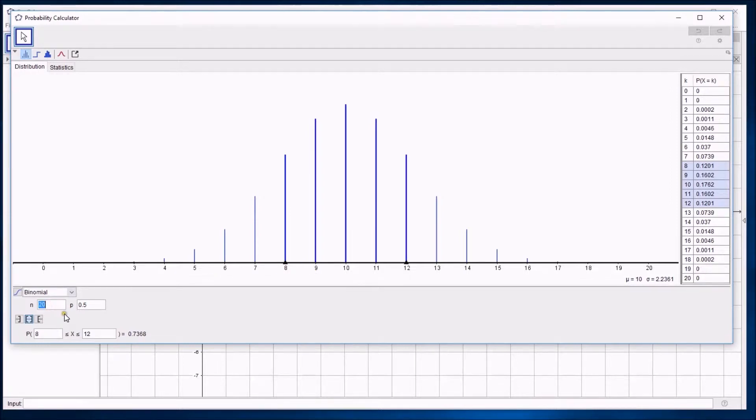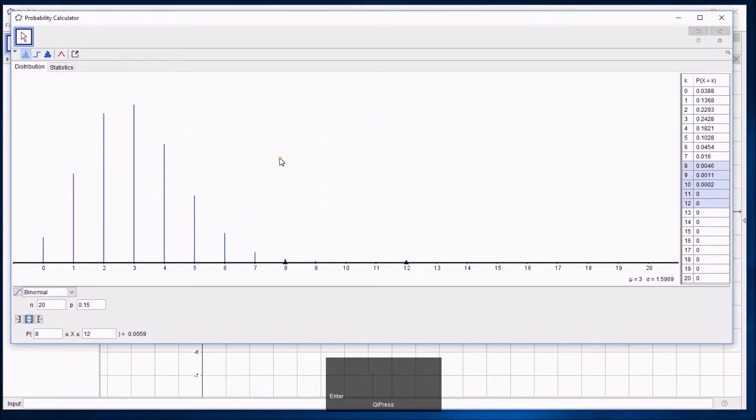At the moment, it's got 20 trials. That's what this N stands for. And a probability of each thing being successful at 0.5. If I change this to make it less symmetrical, if I change it to be, say, 0.15, you can see the distribution changes, which is maybe what you expect.